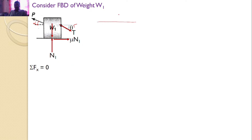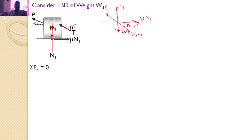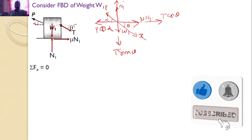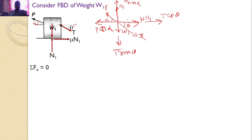Transfer all forces along the x-axis and y-axis. W1 acts downward, N1 acts upward, mu times N1 acts horizontally, tension T makes angle theta, and force P makes angle alpha. Resolving: T has horizontal component T cos(theta) and vertical component T sin(theta); P has horizontal component P cos(alpha) and vertical component P sin(alpha).